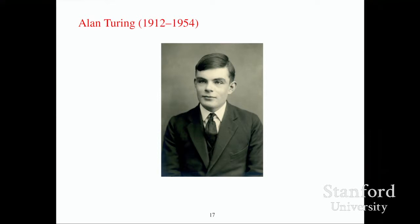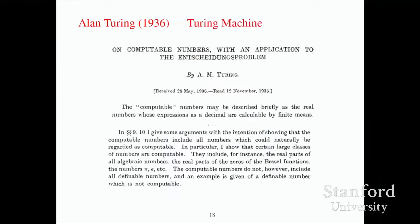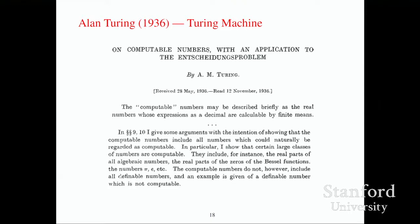What Turing did that was most important and different was not mathematics, but philosophy. He explained why what a Turing machine could do would be the same as what a computer could do, where a computer meant a person following an algorithm. He gave a detailed argument explaining that you must only be able to see a finite number of symbols at one time, because people cannot distinguish between 999,999,999,999,999 and 999,999,999,999,998. What a lovely argument.